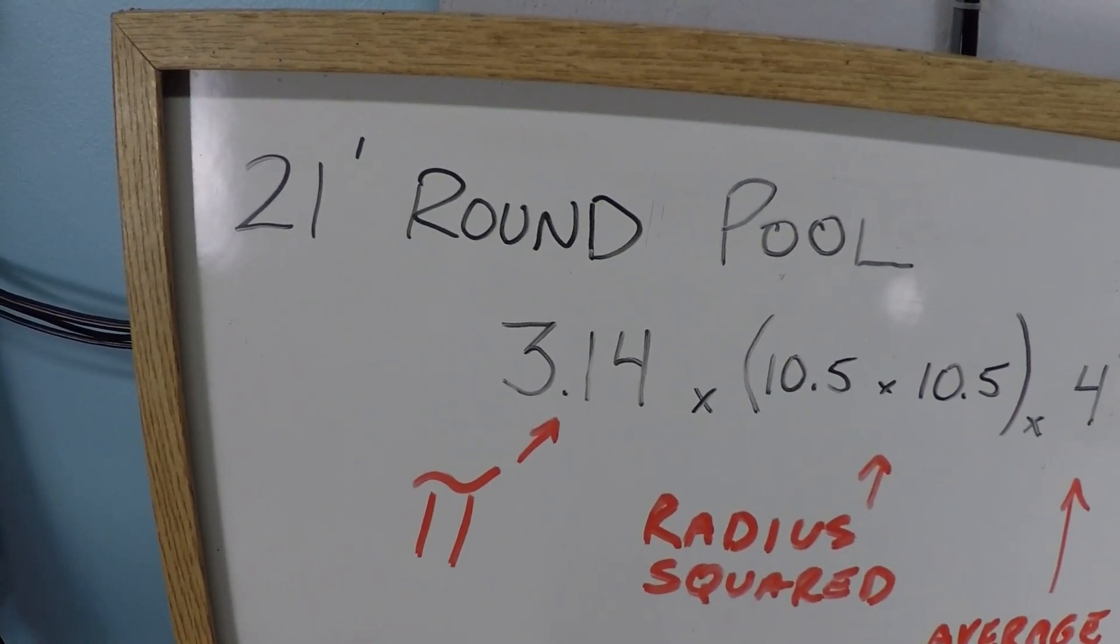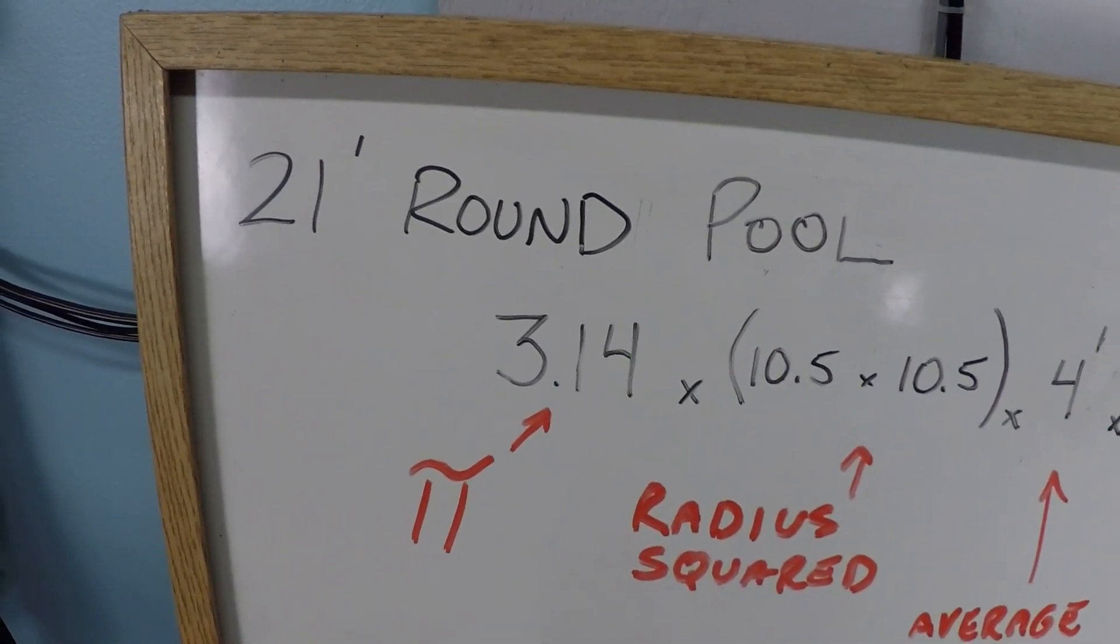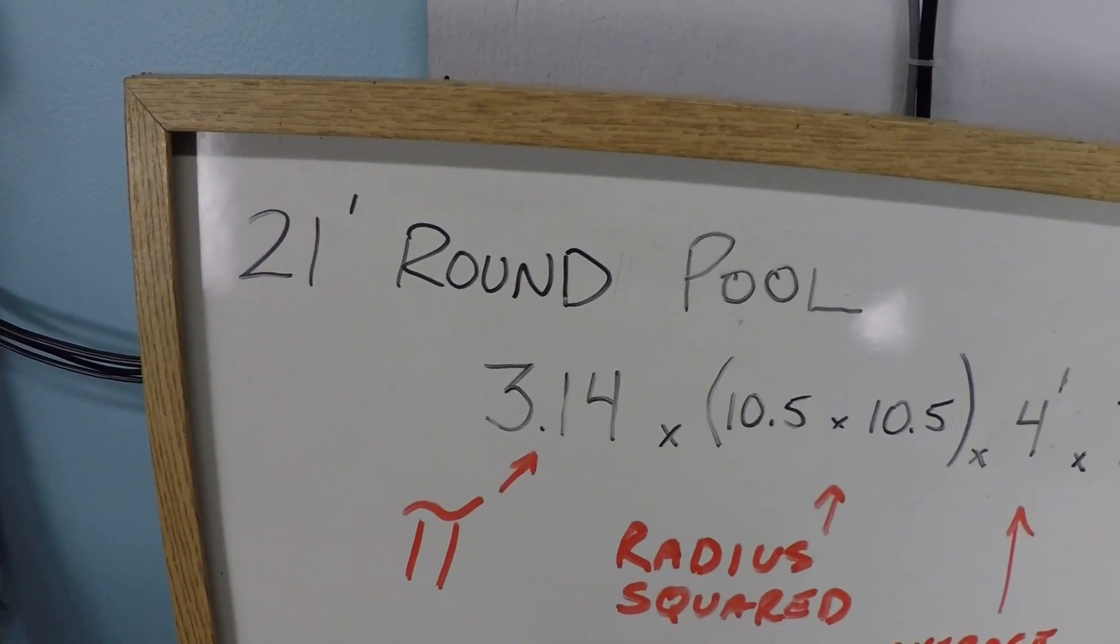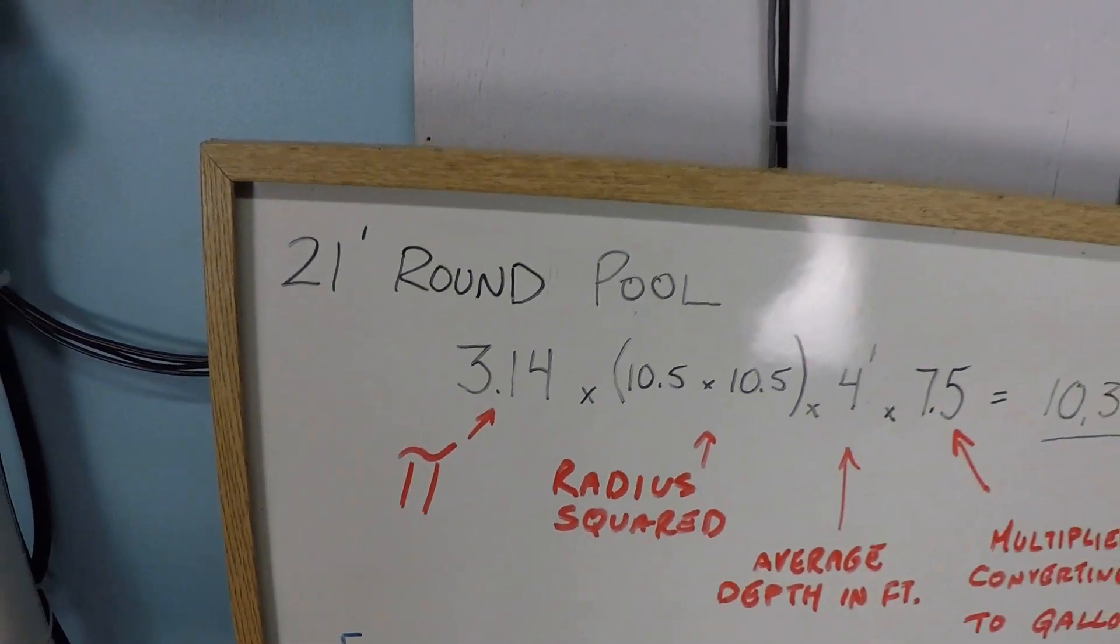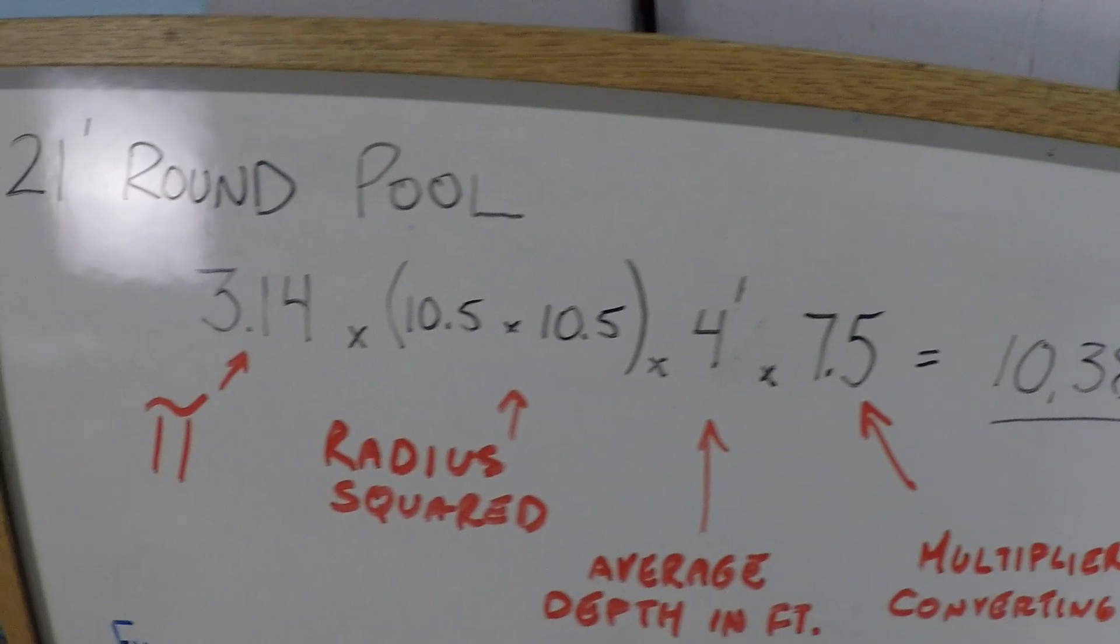Let's look at setting up a variable speed pump filtration schedule for a 21-foot round pool. The first thing we need to know is the volume of this pool.